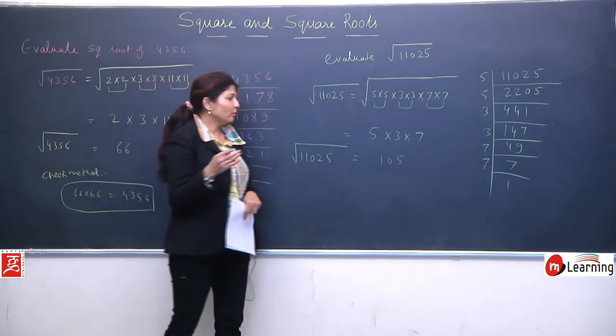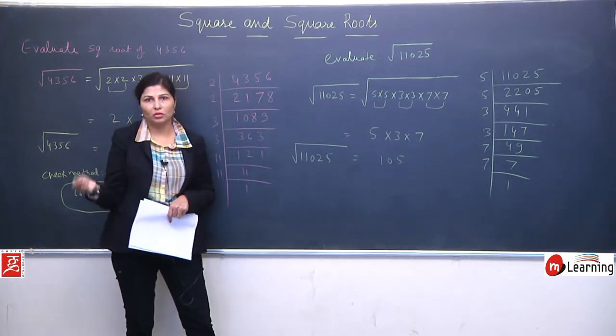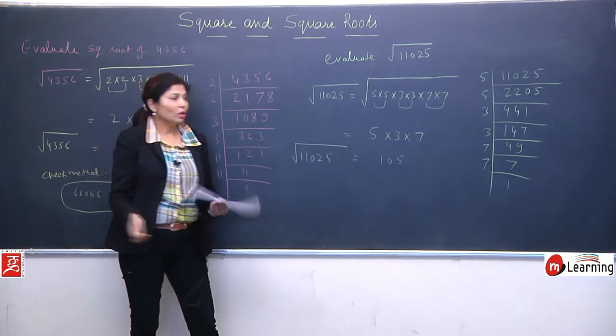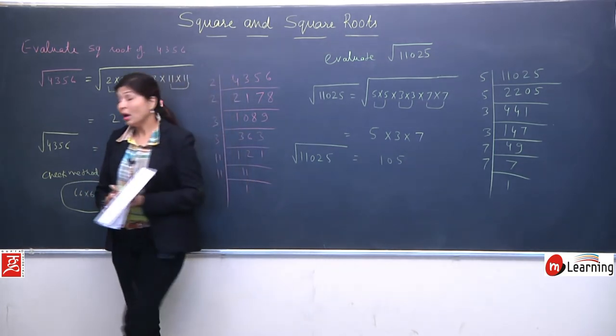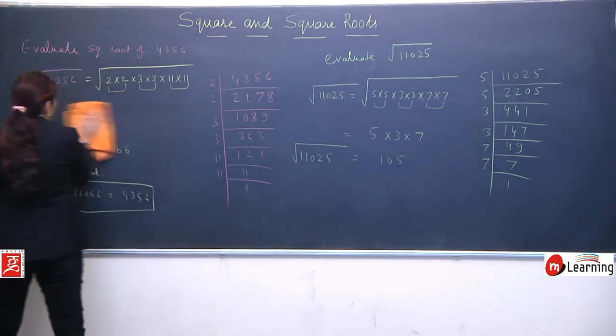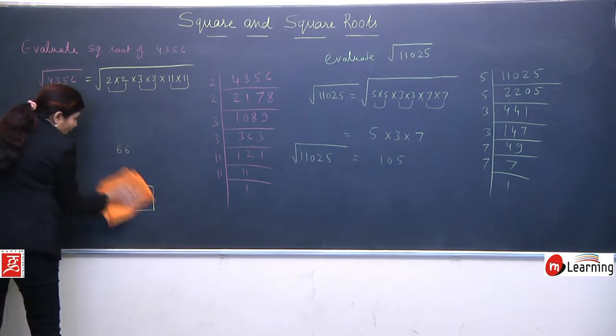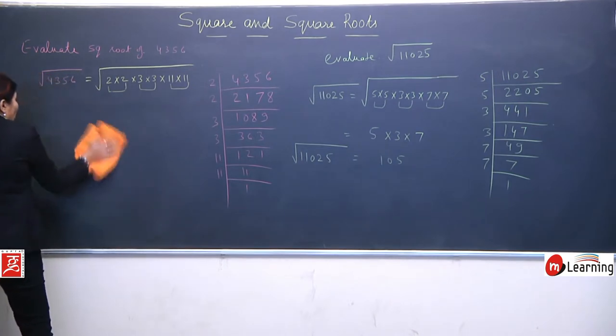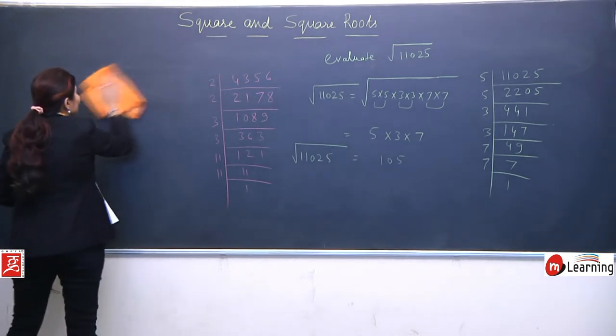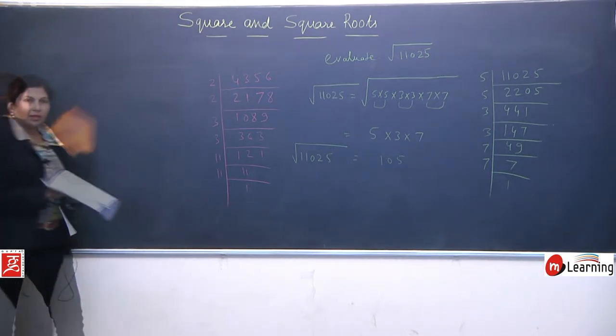So the square root of 11025 is equal to 105. If you want to check, then multiply 105 into 105. The result should equal this. Now we will take applications. You can understand yourself that we already studied this in previous classes, but we didn't know we were learning square roots.